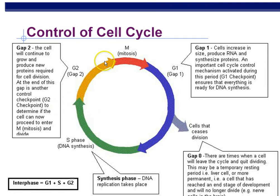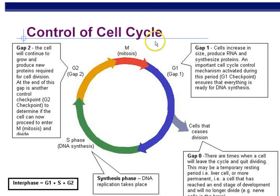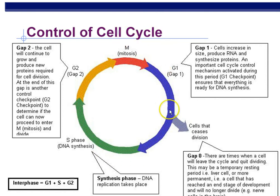Then you're in G2 — more growth, normal cell activity, and making extra organelles so there are enough for two cells. After interphase comes the mitotic phase, which includes mitosis (PMAT) as well as cytokinesis. Once that's over, you're back at G1. Keep in mind that interphase is most of the cell cycle — about 90% of the cell cycle is spent in interphase.